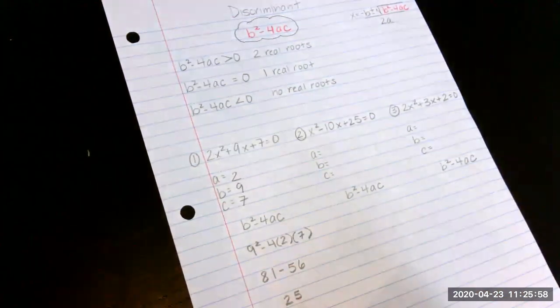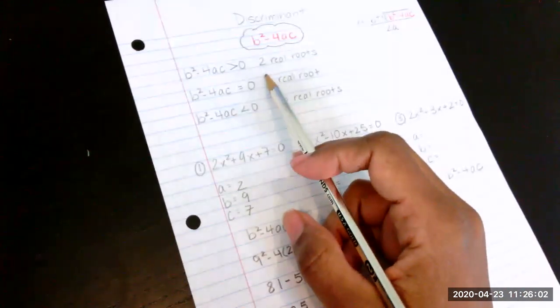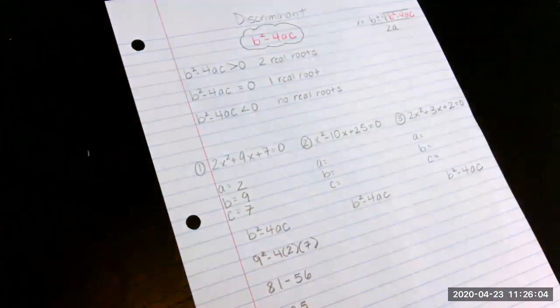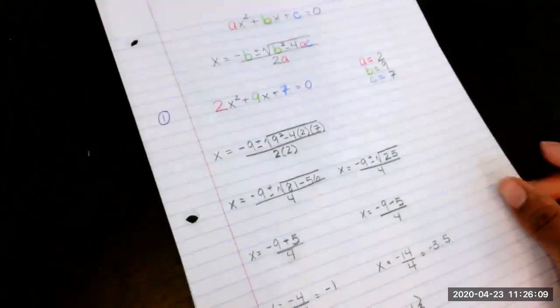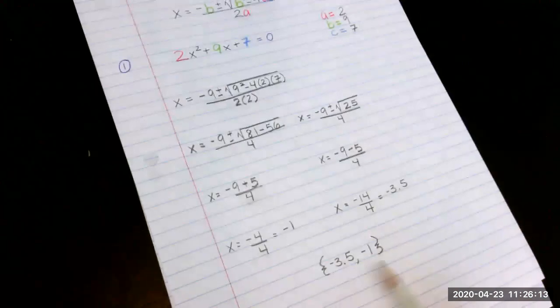So if you notice, 25 is greater than 0, that means if you were to graph this, you would see it had two roots. And I'll show you from the previous problem, we did this. This is the same equation and you notice it has two roots.